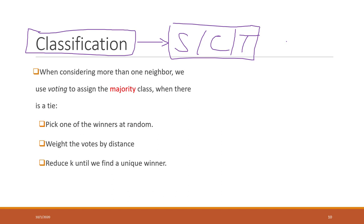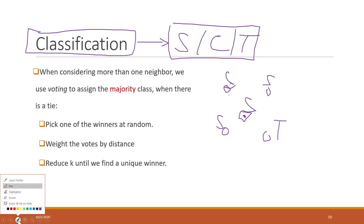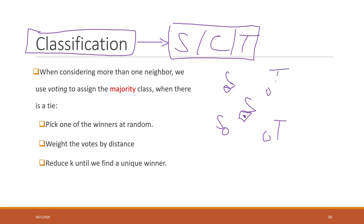The rule is that when we consider more than one neighbor, we use a vote to assign the majority class. For example, if we have four neighbors and three are single family homes and one is a townhouse, this house will be predicted as a single family home. But what if there's a tie? If one of those is now a townhouse, creating a tie, there are several ways to handle it. The first is to just pick one randomly, since ties are relatively rare.